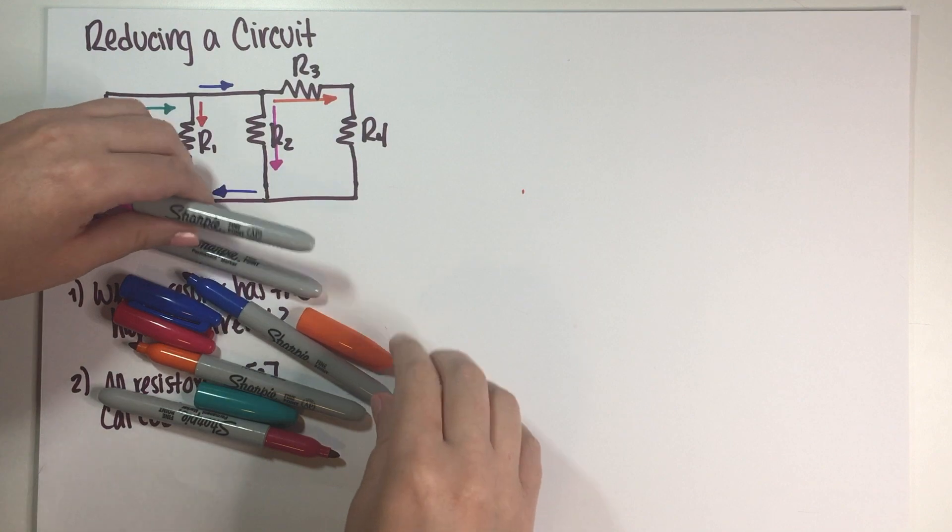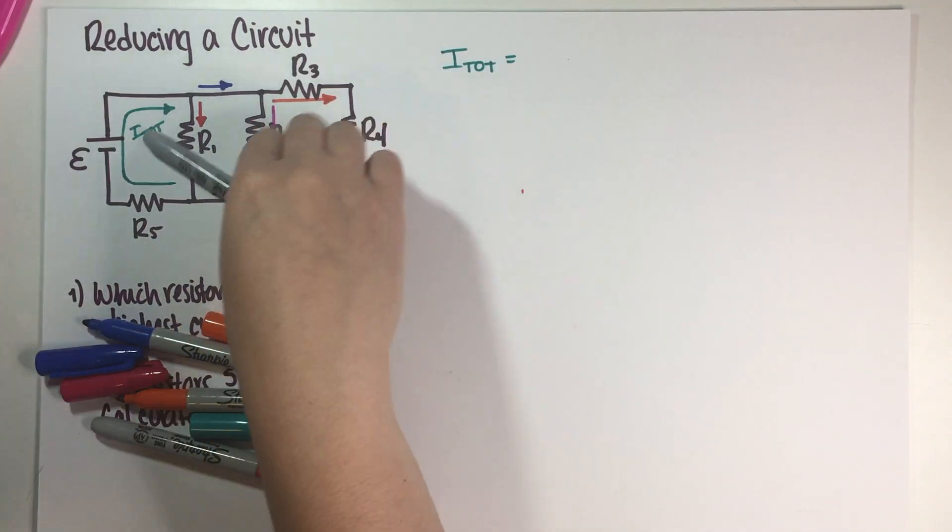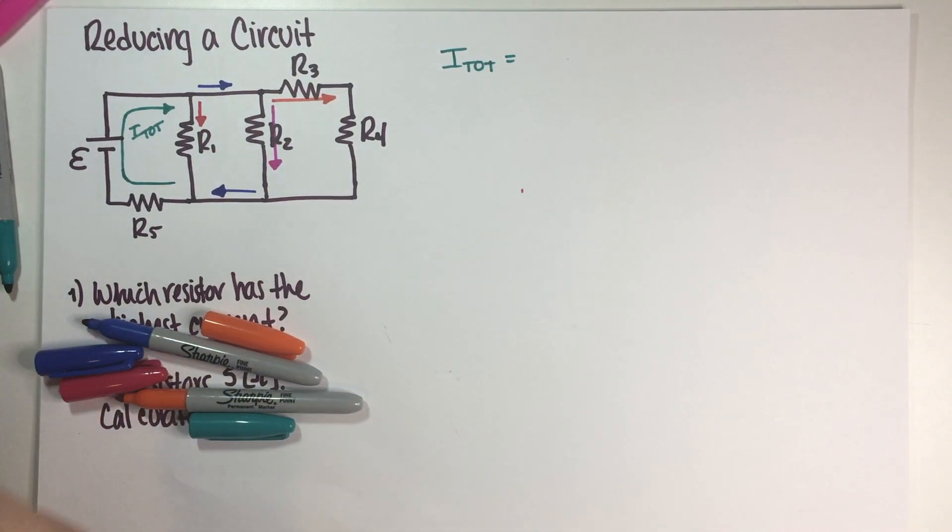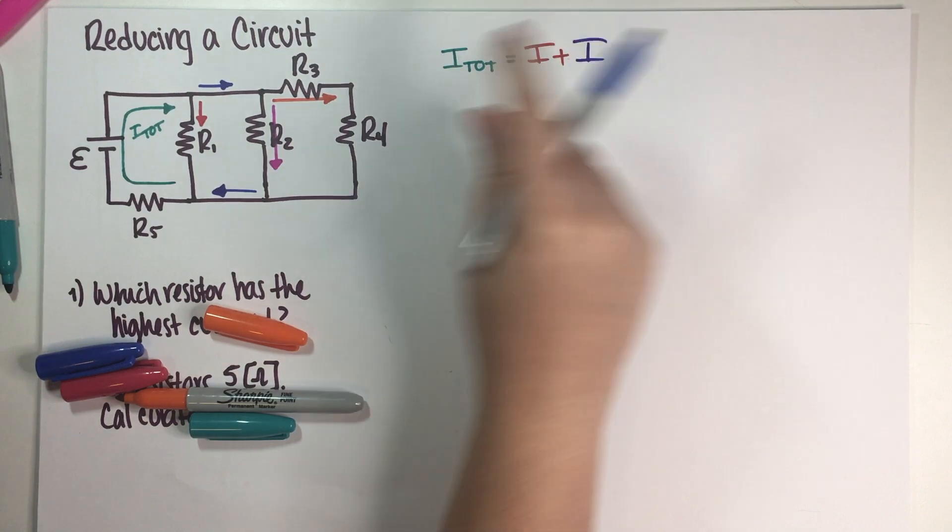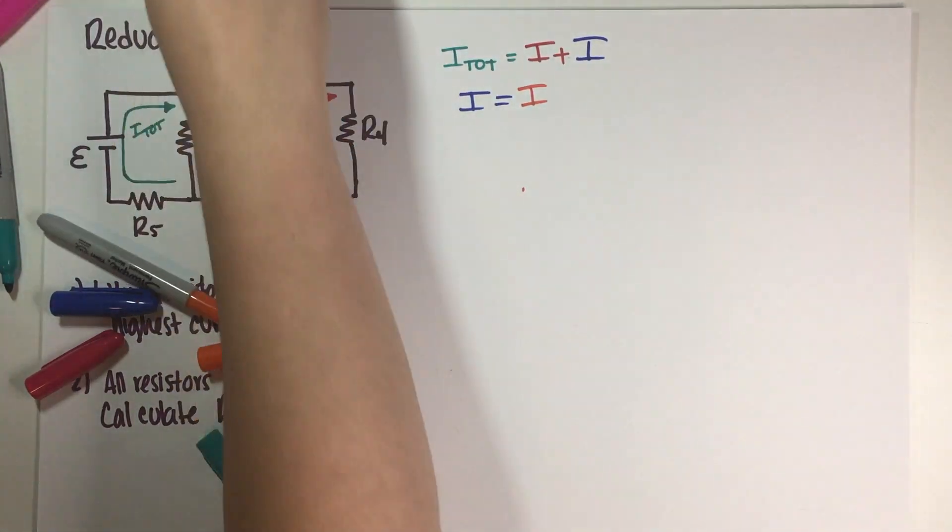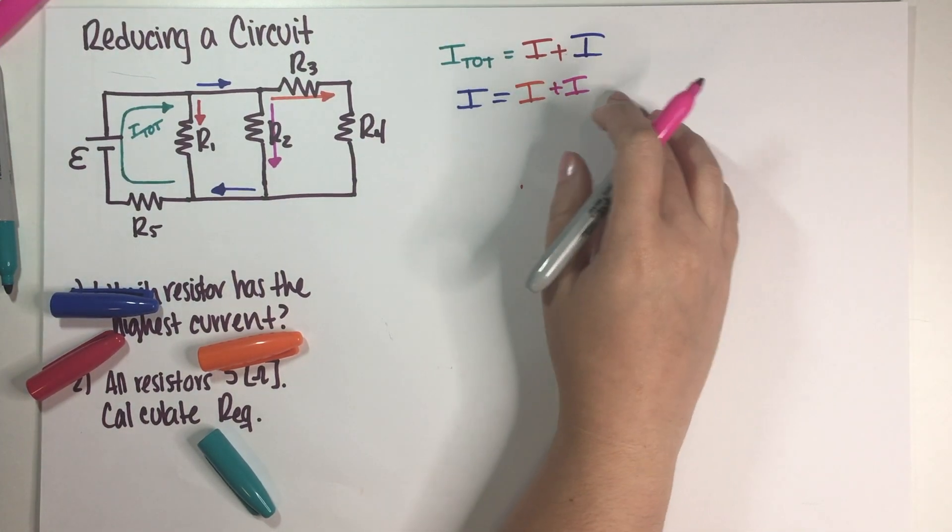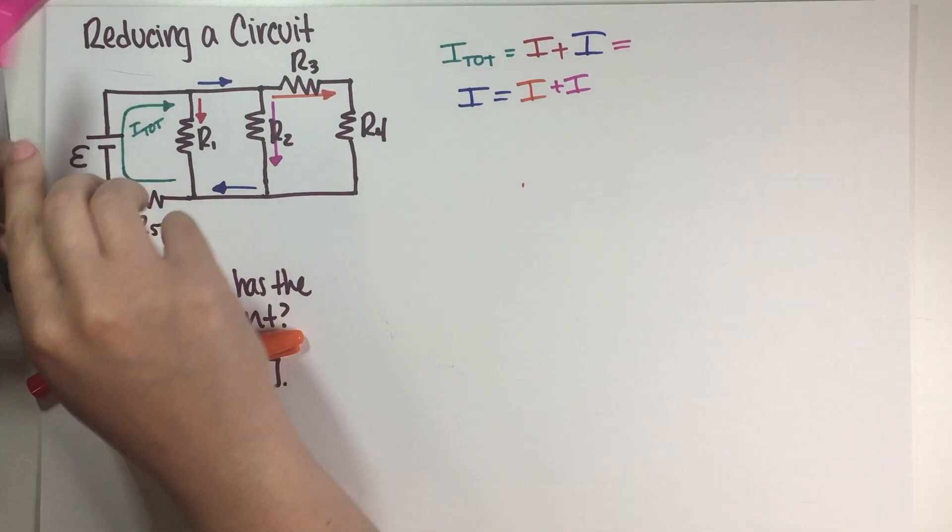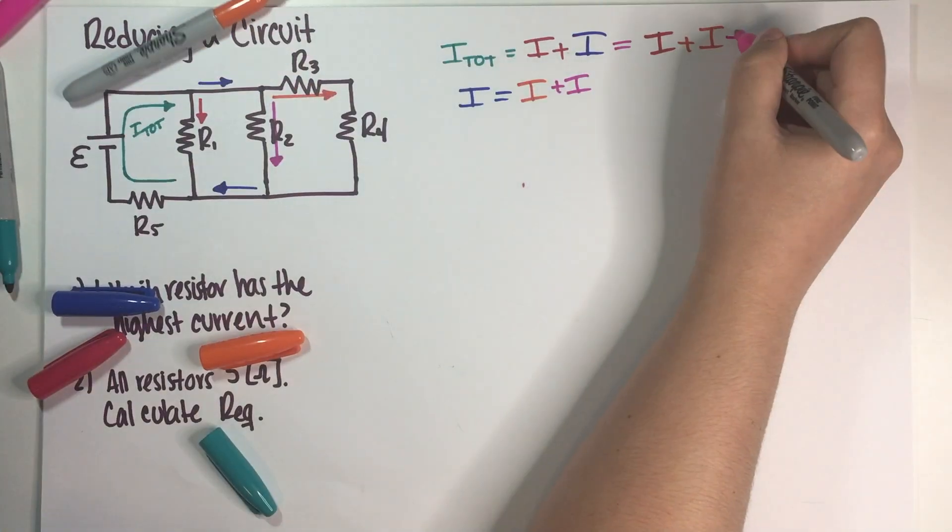So we have basically a total current. I'm just going to use colors instead of naming them. So we have a total current that's basically split up into red and blue. And then also blue is split up into orange plus pink. So now clearly we have a final answer just from knowing how the current splits, because this basically means that the total current is equal to your red, and then blue is equal to these two. So this is plus orange plus pink.